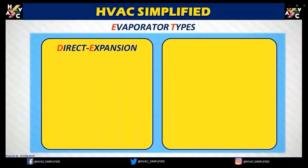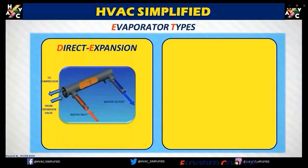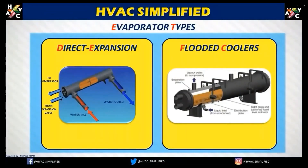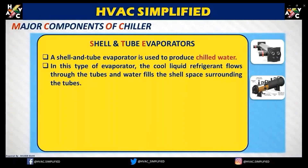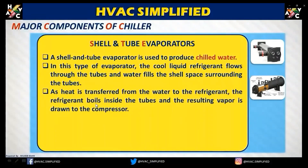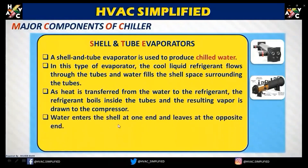Now let us see the evaporator types. The first is a direct expansion evaporator, and the second is a flooded cooler evaporator. In a direct expansion evaporator, a shell and tube evaporator is used to produce chilled water. The cooled liquid refrigerant flows through the tubes and water fills the space surrounding the tubes. Heat is transferred from the water to the refrigerant, and the refrigerant boils inside the tubes — the resulting vapor is drawn to the compressor.